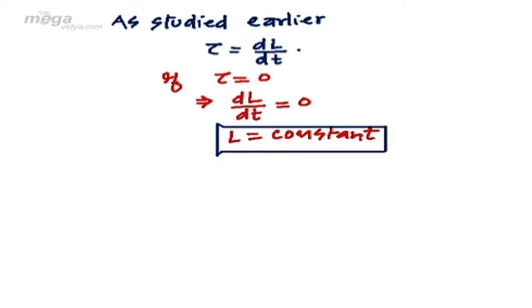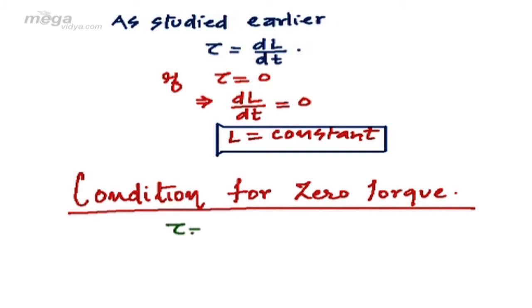Now let us see the condition for the torque to be zero. As we have already studied, torque is equal to R·F·sin θ. Thus torque will be zero if R is equal to zero, which means that the force passes through the axis of rotation.